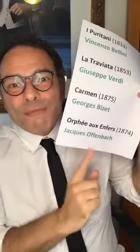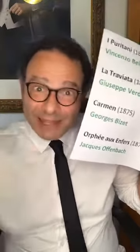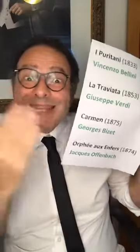What is an operetta? This is the Can-Can from Jacques Offenbach's Orpheus in the Underworld — the same myth, but now it's a comedy. An operetta is an opera with spoken dialogue: instead of having people sing all the way through, we have spoken dialogues between the arias. That's what an operetta is.